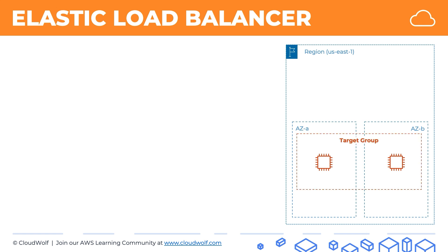Now it doesn't have to be just two instances — it can be any number of instances. For the sake of argument today we'll be looking at two. So we've linked them up into a target group and what we can do next is create an application load balancer and connect it to this target group.